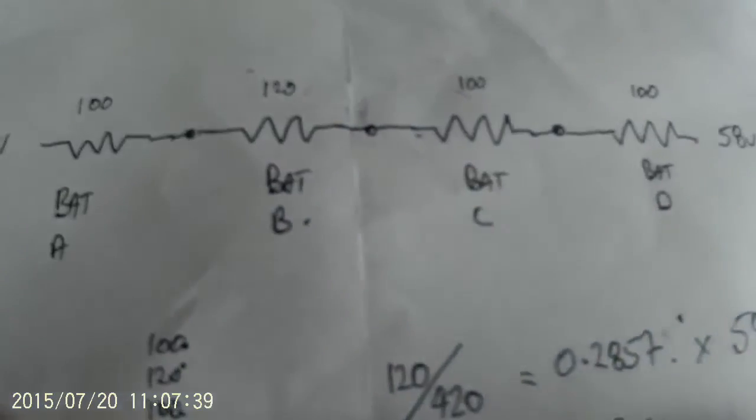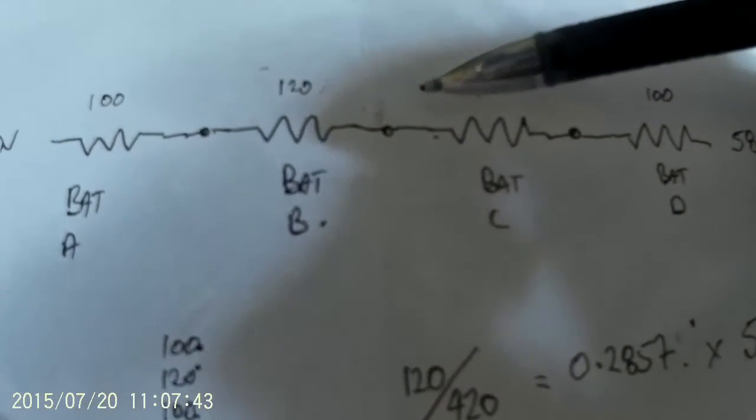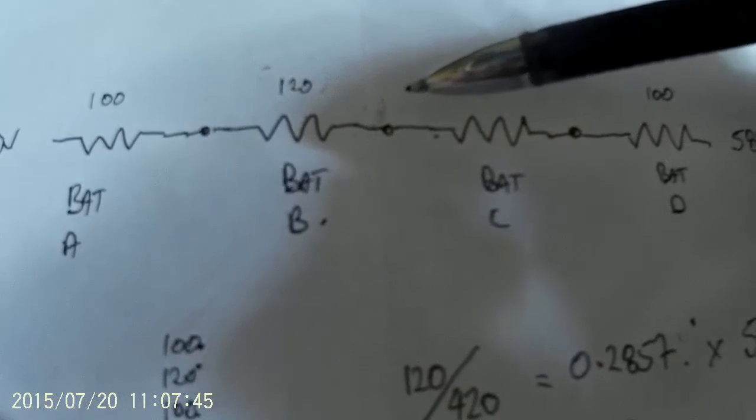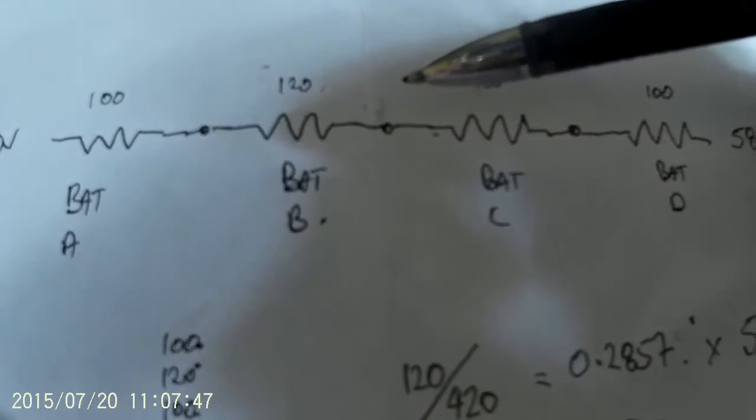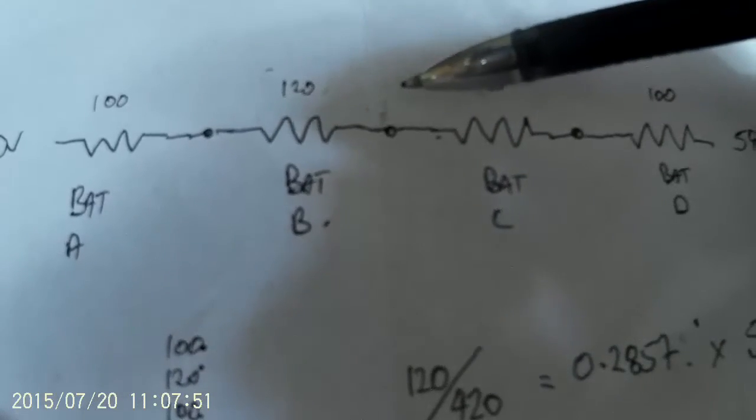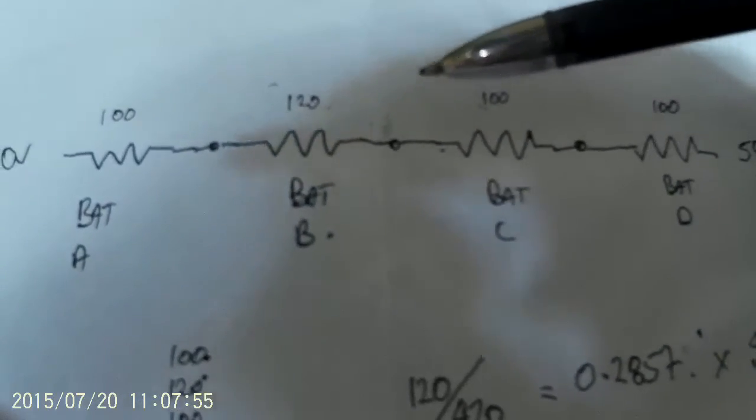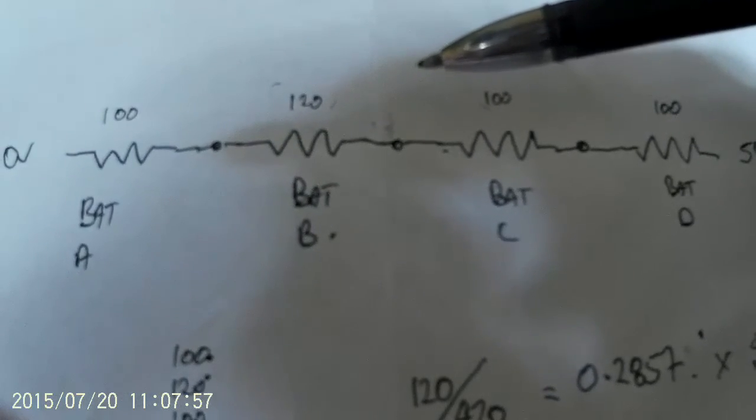Also, the time that they really work the best is right towards the end of Absorb. My 380 amp hour battery, they start to really kick in well when it's accepting about 3 amps, so about 1% of the battery, 1% of the bank capacity.